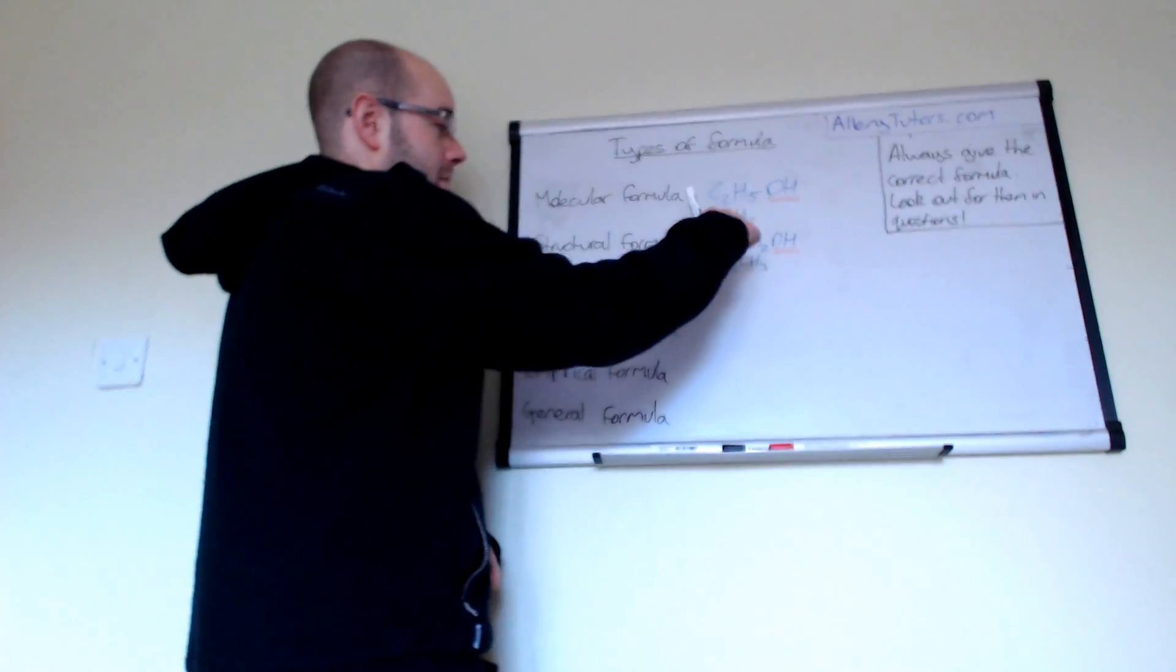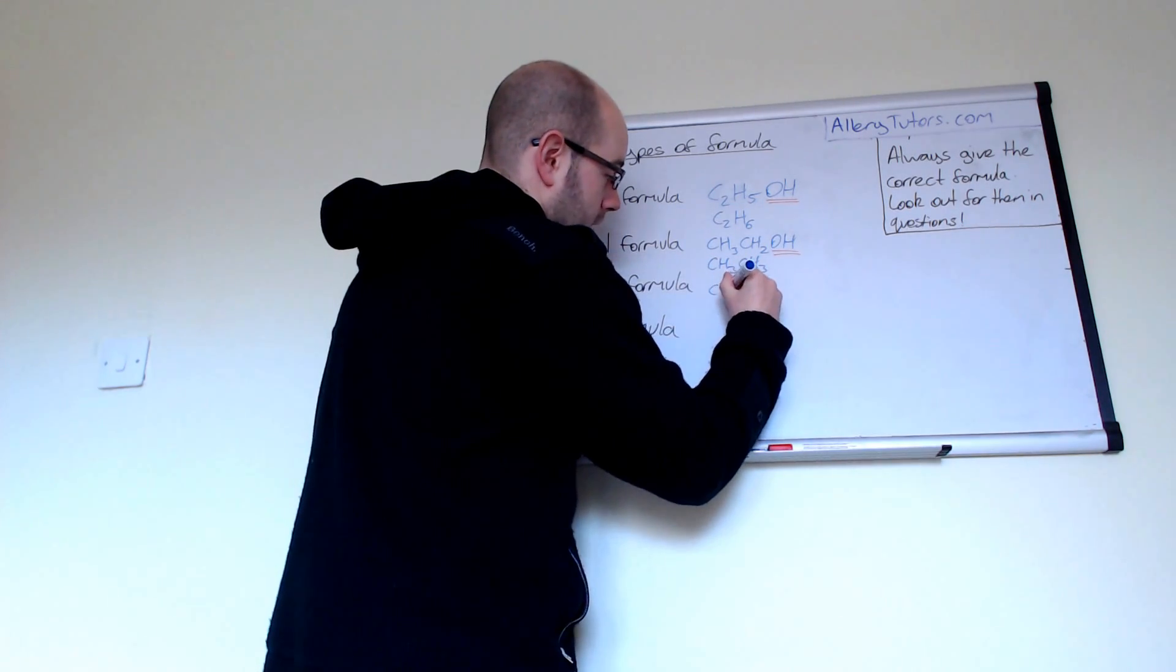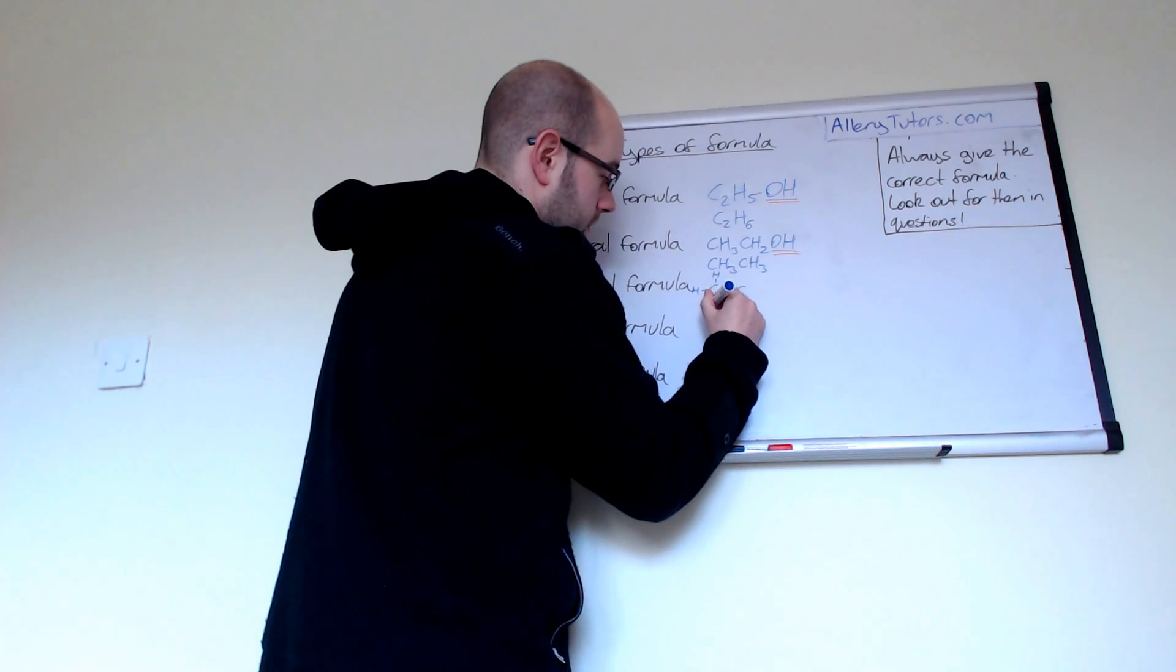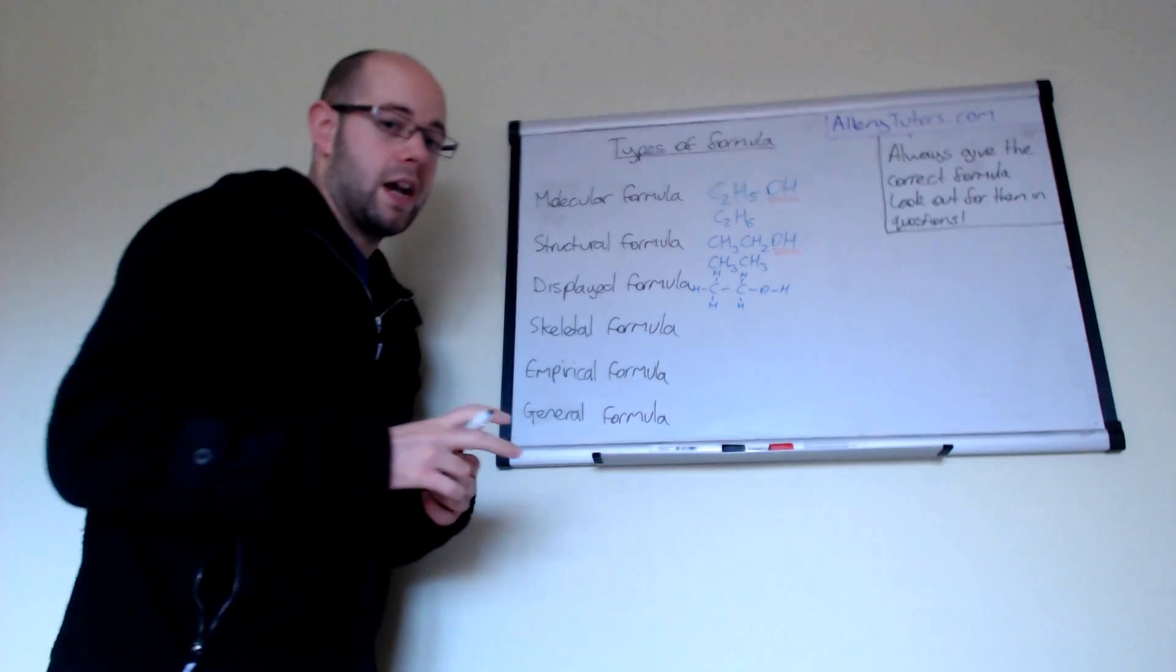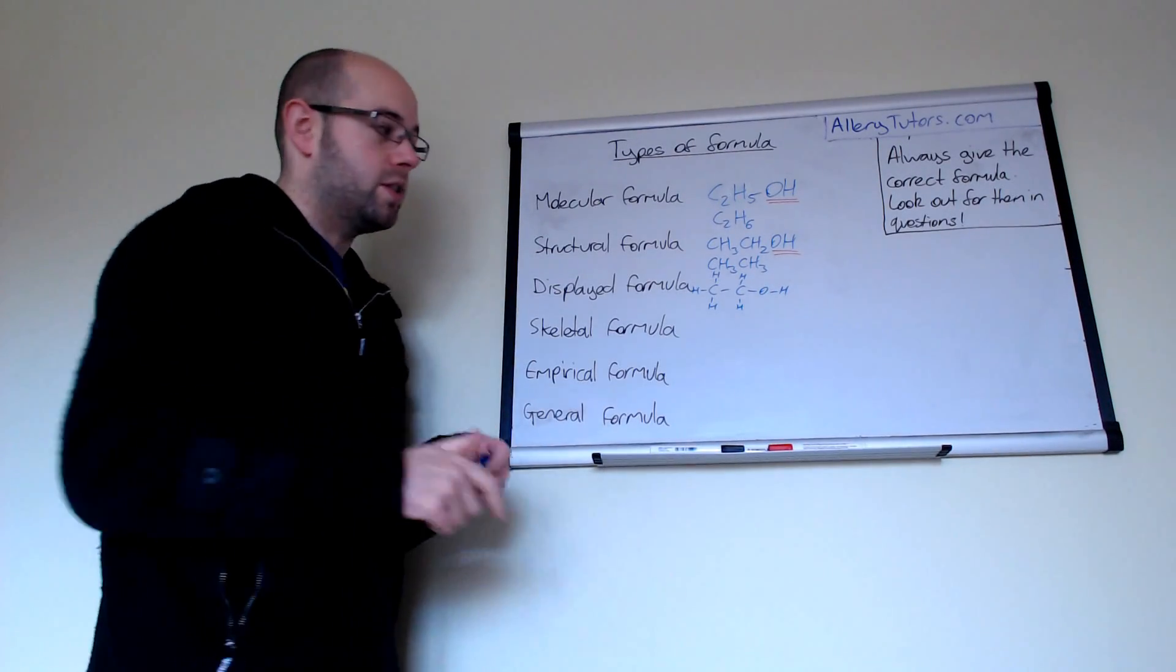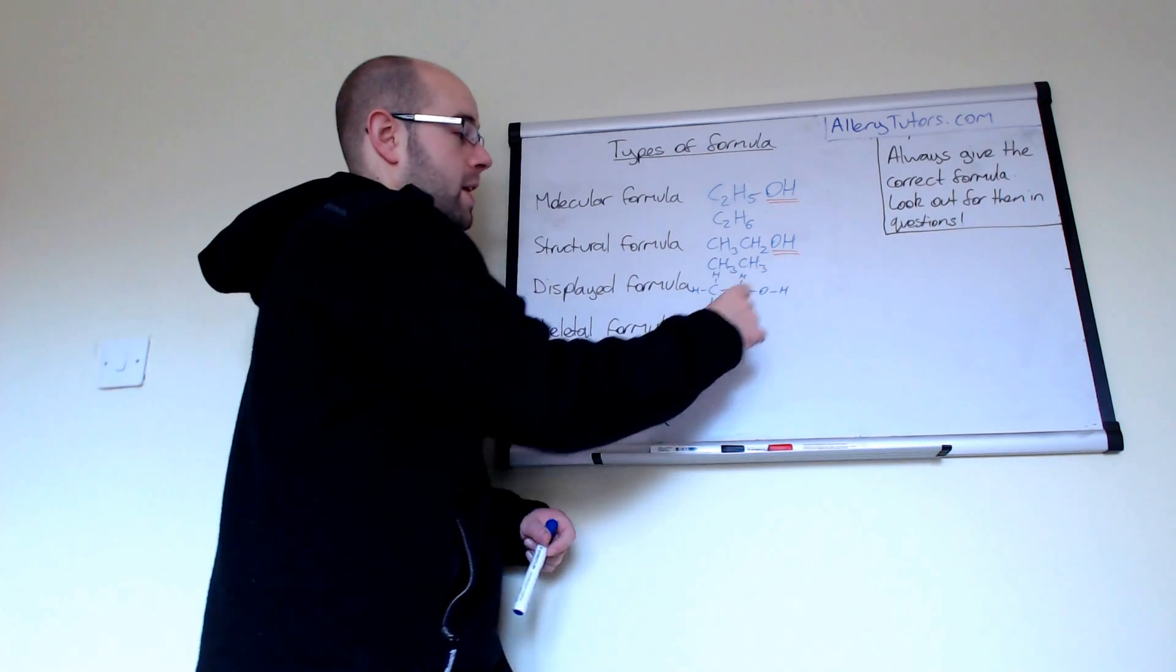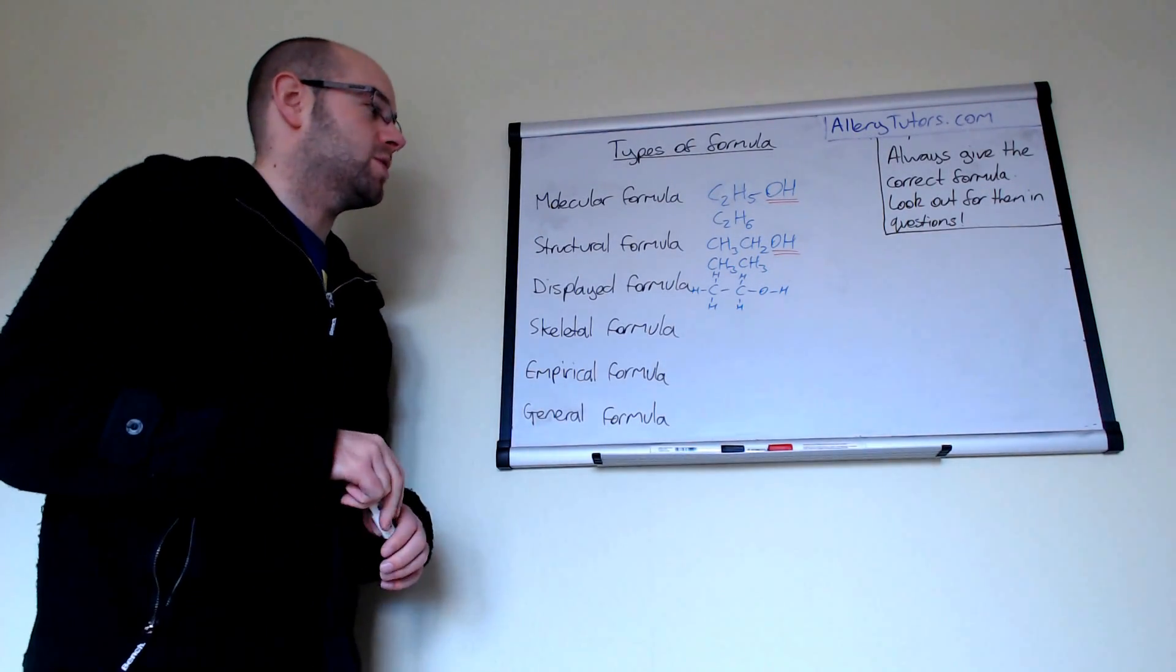For example if we just draw the displayed formula of ethanol you would have your two carbons there, all your hydrogens on there and then you have O bond H. The crucial thing is some people can kind of cut corners when they miss out the bond between the O and the H and you've got to show every single bond.